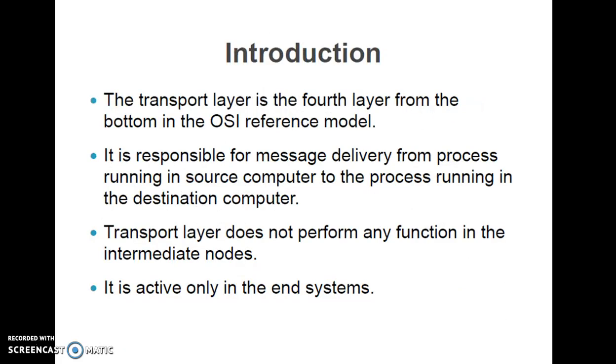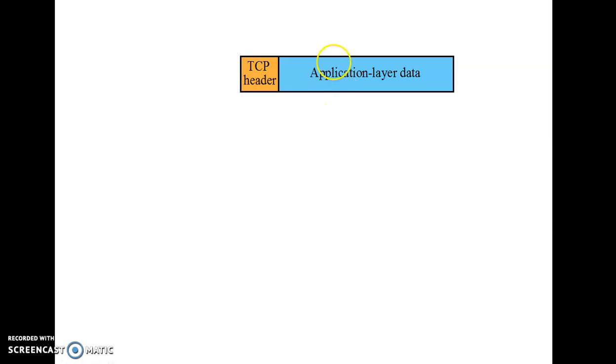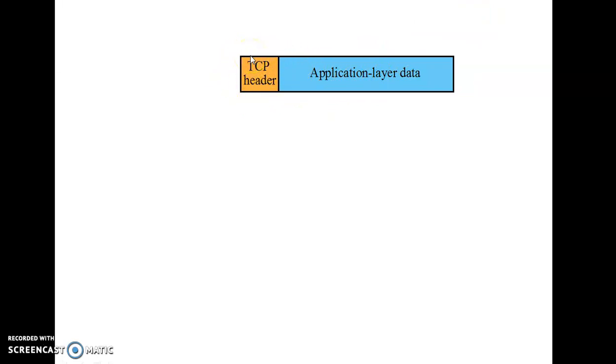Now we'll understand encapsulation. The data coming from the application layer towards the transport layer gets encapsulated — a header is appended. At the transport layer, the header appended is the TCP header. The application layer data encapsulated with the TCP header forms a segment.